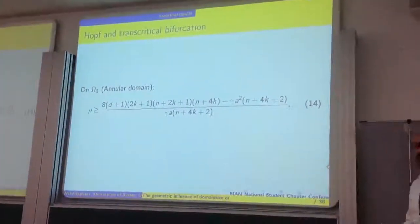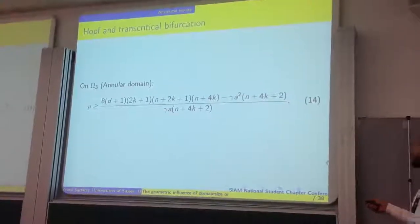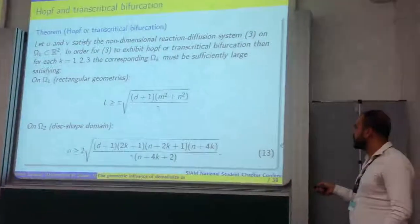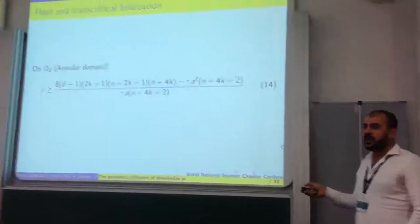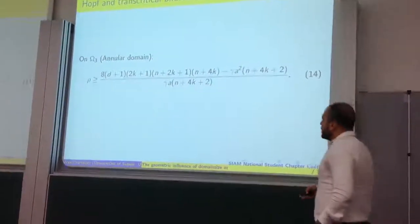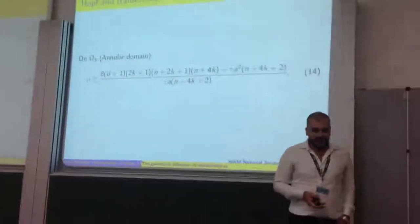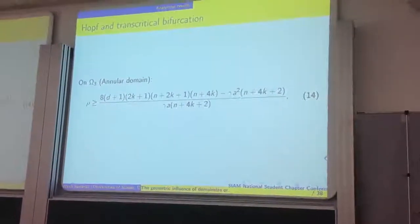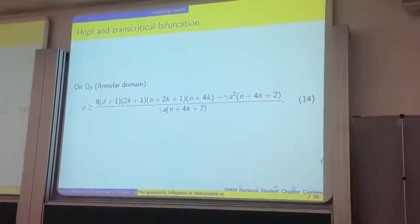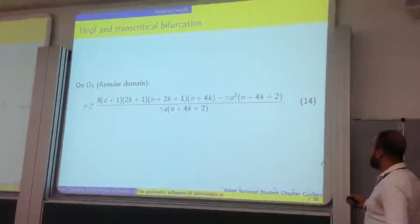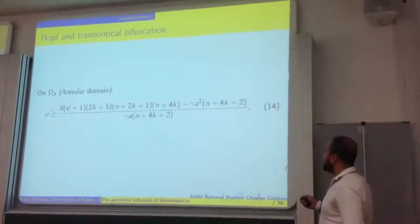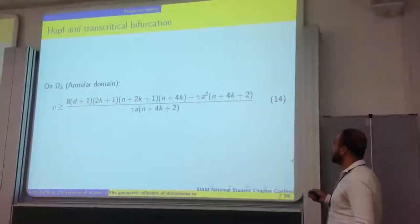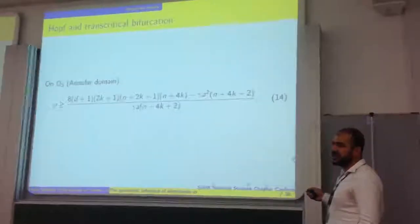For the disk-shaped domain, the equivalent condition is that the radius of a disk has to be chosen sufficiently large, satisfying this inequality, in order to admit temporal periodicity in pattern formation. Similarly, for the annular region, we have this expression. You might be wondering where the square root disappeared — we don't end up having a square root for this. I speculate that the square root part is somehow mimicked by the existence of this extra term that is subtracted, and this contains the inner radius A.